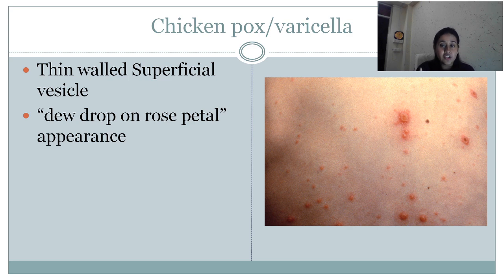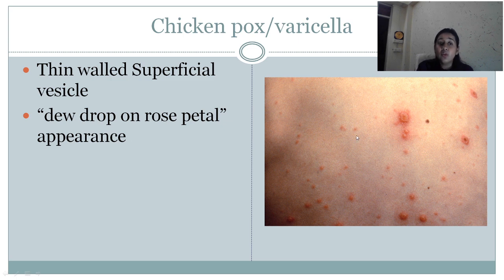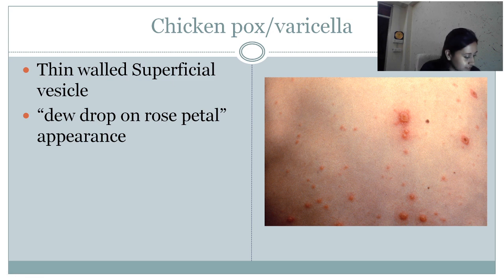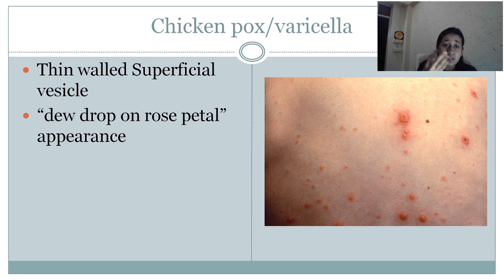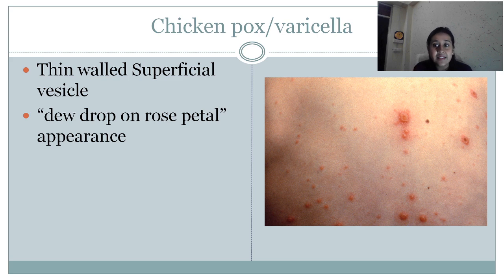Another important viral infection is chickenpox or varicella. The clinical feature is discrete vesicles which are thin-walled and superficial with an erythematous base — this looks like a dew drop on a rose petal appearance. Because of the presence of the erythematous base, the appearance is called 'dew drop on a rose petal.' In the history: a child or adult develops fever and soon develops multiple vesicular lesions all over the body with clear fluid-filled vesicles and erythematous base, and in some cases central umbilication is also visible.